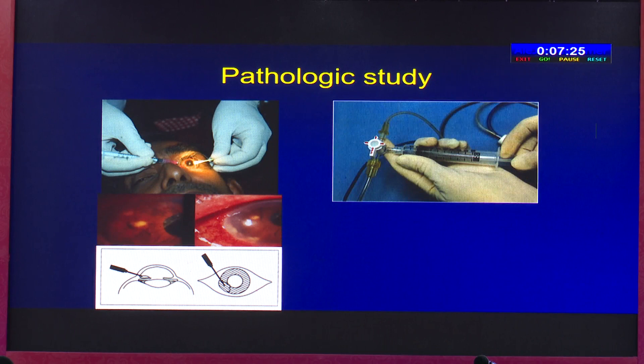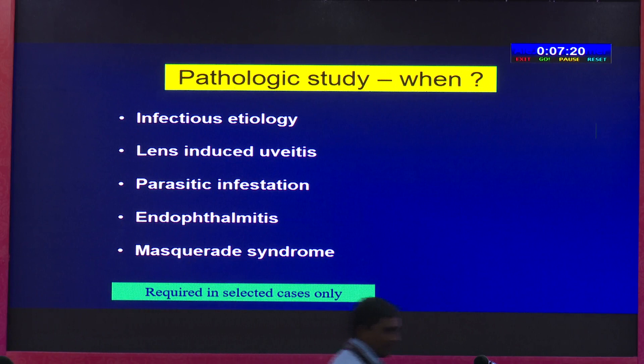This can be done by the anterior chamber TAP, iris biopsy, vitreous biopsy, or retinochoroidal biopsy. It's required in selected cases only — not all cases require pathologic study. But if you suspect infectious etiology where the diagnosis is not established by standard laboratory tests, or lens-induced uveitis, parasitic infestation, endophthalmitis, or masquerade syndrome.